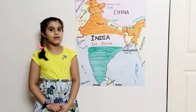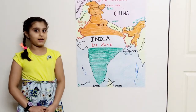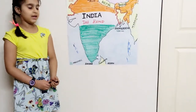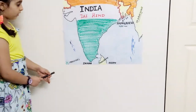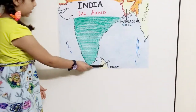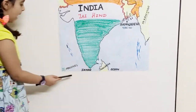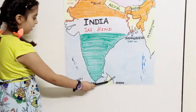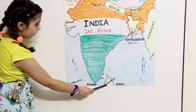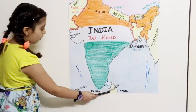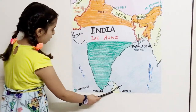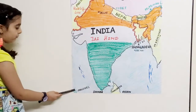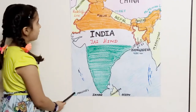Now we will learn about the countries who share water borders with India. The countries are Sri Lanka and Maldives. The capital of Sri Lanka is Colombo and the capital of Maldives is Malé.